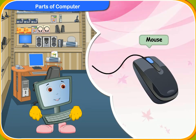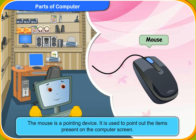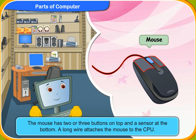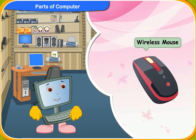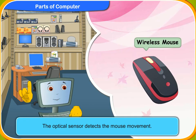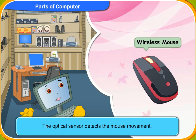Let us now discuss about the mouse. You probably know that the mouse is a pointing device. I know that the mouse is used to point out the items present on the computer screen. The mouse has two or three buttons on top and a sensor at the bottom. A long wire attaches the mouse to the CPU. Nowadays, wireless mouse is also available. Why is there a light under the mouse? That is the optical sensor. It detects the mouse movement. Earlier, there used to be a ball inside the mouse instead of an optical sensor.